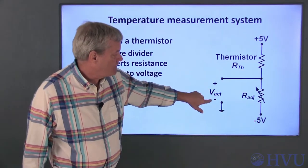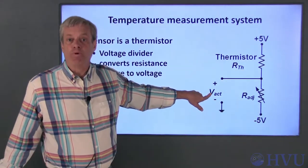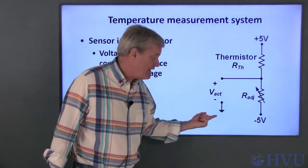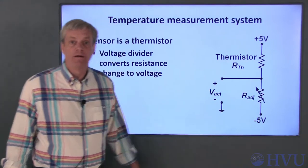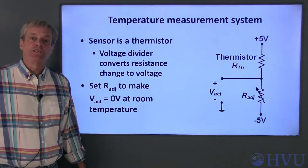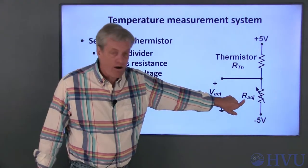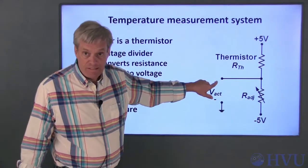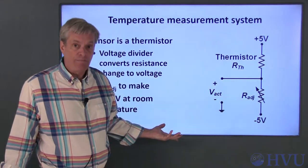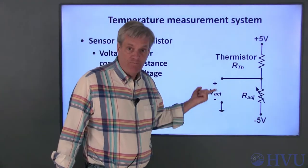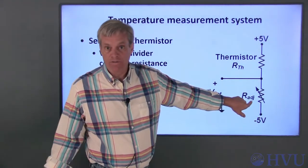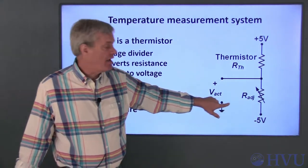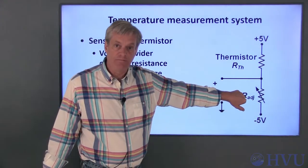The output voltage VACT and both power supplies all have to be relative to the same reference, indicated by the ground symbol. I'll use a potentiometer to implement this variable resistance, RADJ. Since I want the output voltage to be zero when the thermistor is at room temperature, I'll measure this voltage while I change the value of this resistance. Once I've got a zero volt reading at room temperature, I've got the correct resistance value.